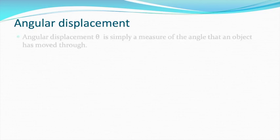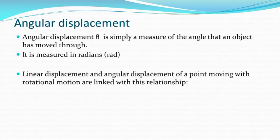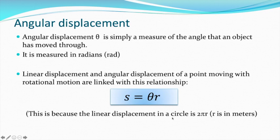What do we mean by angular displacement? It's simply a measure of the angle that you have turned through. And if we measure that in radians, a complete circle will be two pi radians. That gives us a very useful relationship: if you know the angle you've turned through — this theta here is the angle in radians — then all you have to do is multiply by the radius, and you will get the total distance you have moved through. The reason is that if the angle turned through is two pi radians, then the distance is two pi times the radius, which is the circumference.